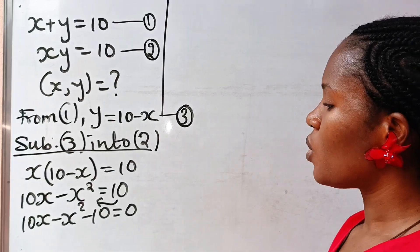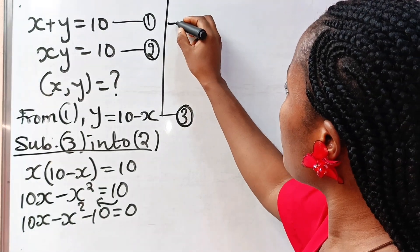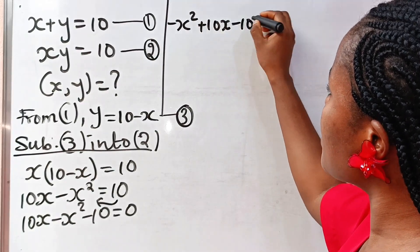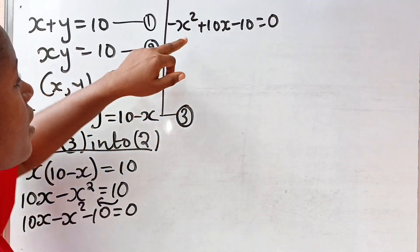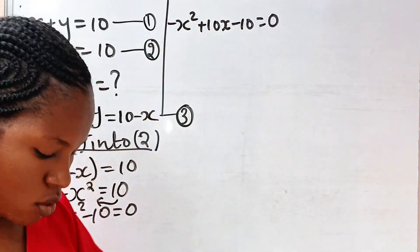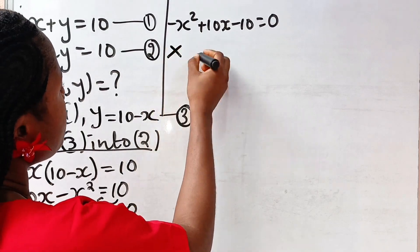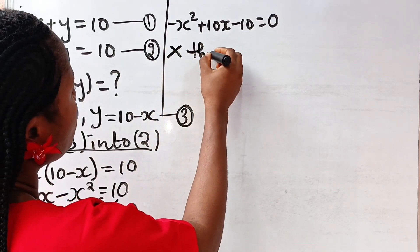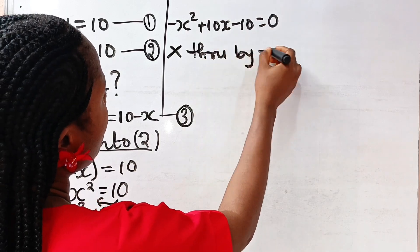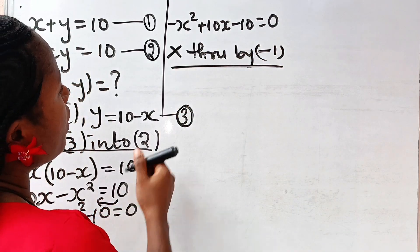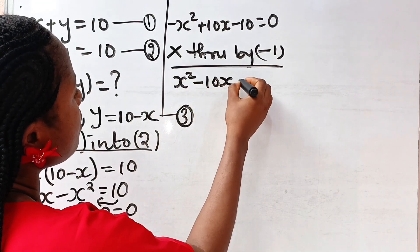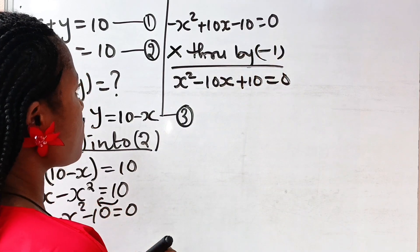If we arrange the variables we are going to have minus x squared plus 10x minus 10 is equal to 0. Now let's remove this negative sign by multiplying through by minus 1. So multiplying through by minus 1, we have x squared minus 10x plus 10 is equal to 0.